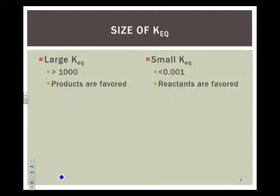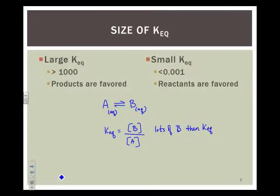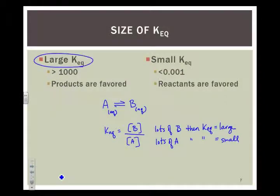The size of the equilibrium constant expression, the general size, is going to tell us something about what's happening at equilibrium. If we think about my equilibrium constant expression for this, it's the concentration of B divided by the concentration of A. So, if I have lots of B, then my equilibrium constant expression, my K_eq, should be large. And if I have lots of A, then my K equilibrium should be small. So, it turns out that if you have a large equilibrium constant expression, and by large we mean greater than a thousand, then we say that products are favored. If you have a small equilibrium constant expression, on the other hand, and by that we mean less than 0.001, then reactants are favored.